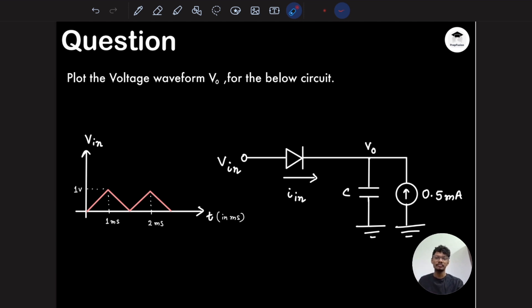I gave you this question - we have to plot the voltage waveform V_o for the below circuit. A diode is given and a capacitor and a current source is also given, and this input is a voltage source. The input is a triangular waveform - everything has been mentioned but the C value has not been mentioned, so we have to have a starting point.